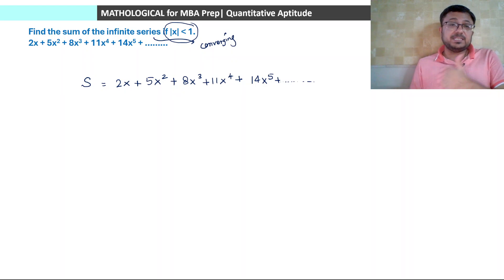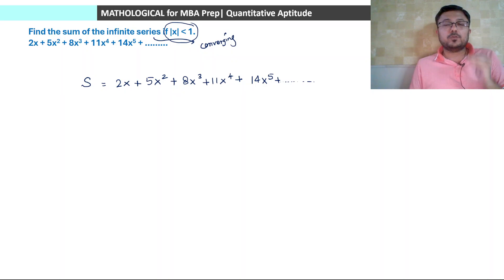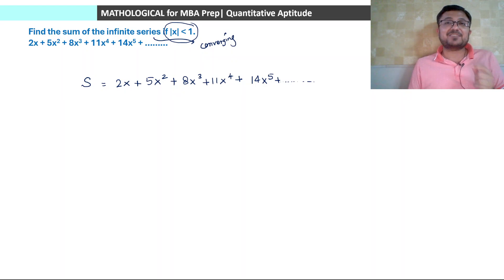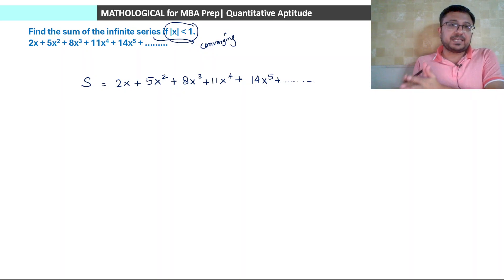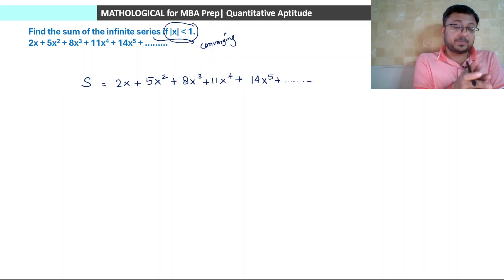The coefficients 2, 5, 8, 11, 14 are in AP form. The approach: multiply S by x to shift terms, then subtract. An AP has a constant common difference, so subtracting the second term from the first, third from second, etc., gives a constant difference. To align terms for subtraction, we multiply the series by x and shift one term so that like powers align — so x² sits under x², x³ under x³, and so on.